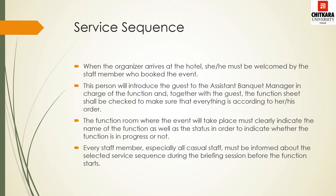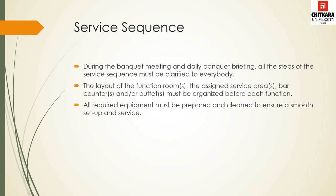The function room must clearly indicate the name of the function and its status — whether the function is in progress or not. In the lobby, a board is also placed so that guests are aware where the function is taking place, with an arrow indicating the direction. Every staff member, especially casual staff, must be informed about the selected service sequence during the briefing before the function starts. During the daily banquet briefing, all steps of the service sequence must be clarified so everyone is aware of what service is required and what equipment is needed. The layout of the function rooms — assigned areas, bar counter, and buffet — must be organized before each function.